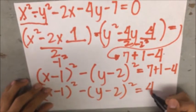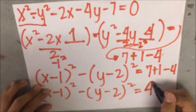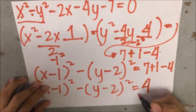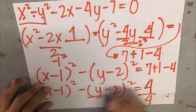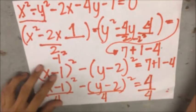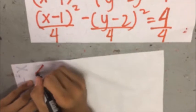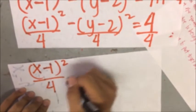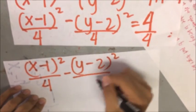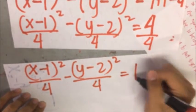Then, after that, this number should be equated to 1. So we need to divide it by 4, the other side by 4. That will give us the equation (x minus 1) squared over 4 minus (y minus 2) squared over 4 equals 1.